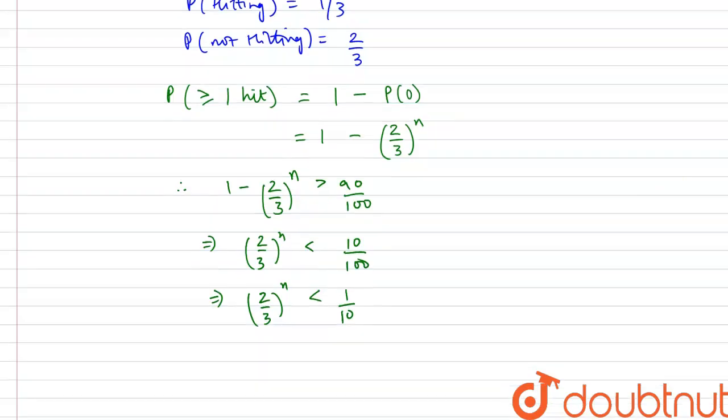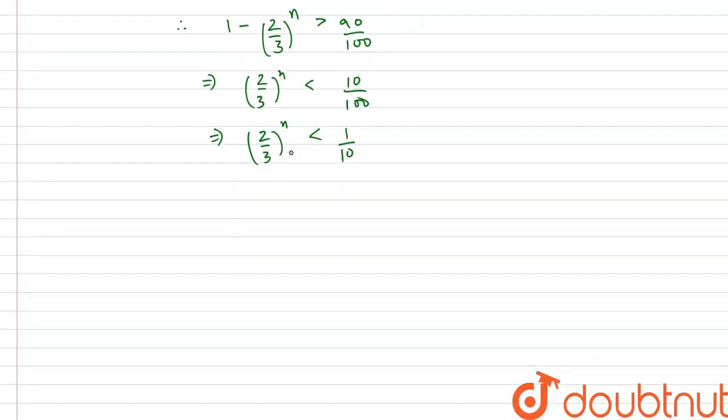Now we need to check by putting all the n values and see which value of n satisfies this equation. For n equals 4, we have 2 by 3 to the power 4, which is roughly 0.2. For n equals 5, 2 by 3 to the power 5 is roughly equal to 0.13. For n equals 6, we have 2 by 3 to the power 6, which is roughly equal to 0.088.